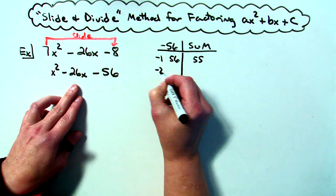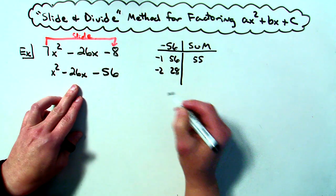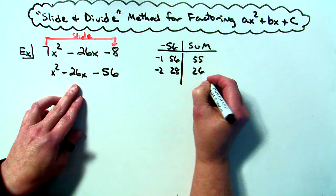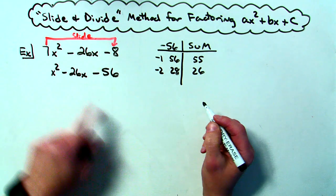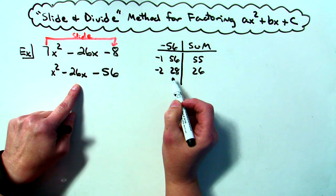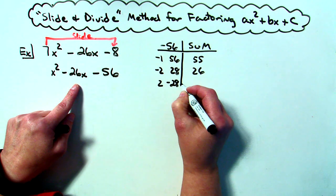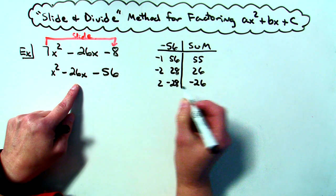If I do negative 2 times 28 that's negative 56. But again if I add I'm going to get 26. Oh but now that's really close. So it looks like all I've got to do is change my signs there, make it a positive 2 and a negative 28. That will give me my negative 26 in the middle.